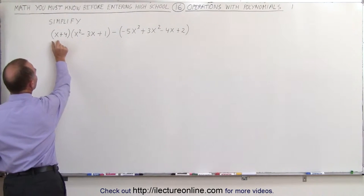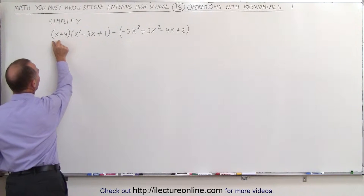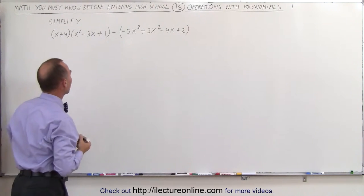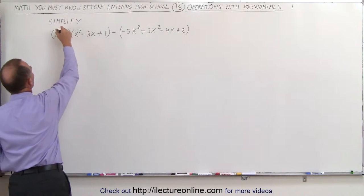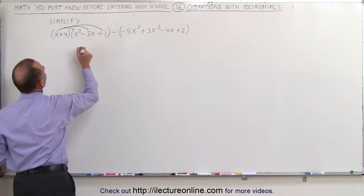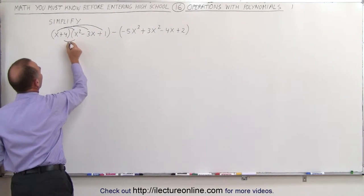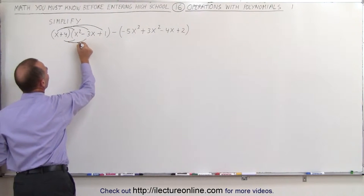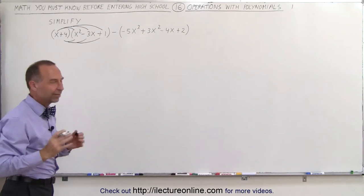That means we multiply each term in the first polynomial with each term in the second polynomial. In other words, we're going to multiply the x times the x squared, times the 3x, and times the 1, and then we take the number 4, multiply it times the x squared, the minus 3x, and the plus 1.